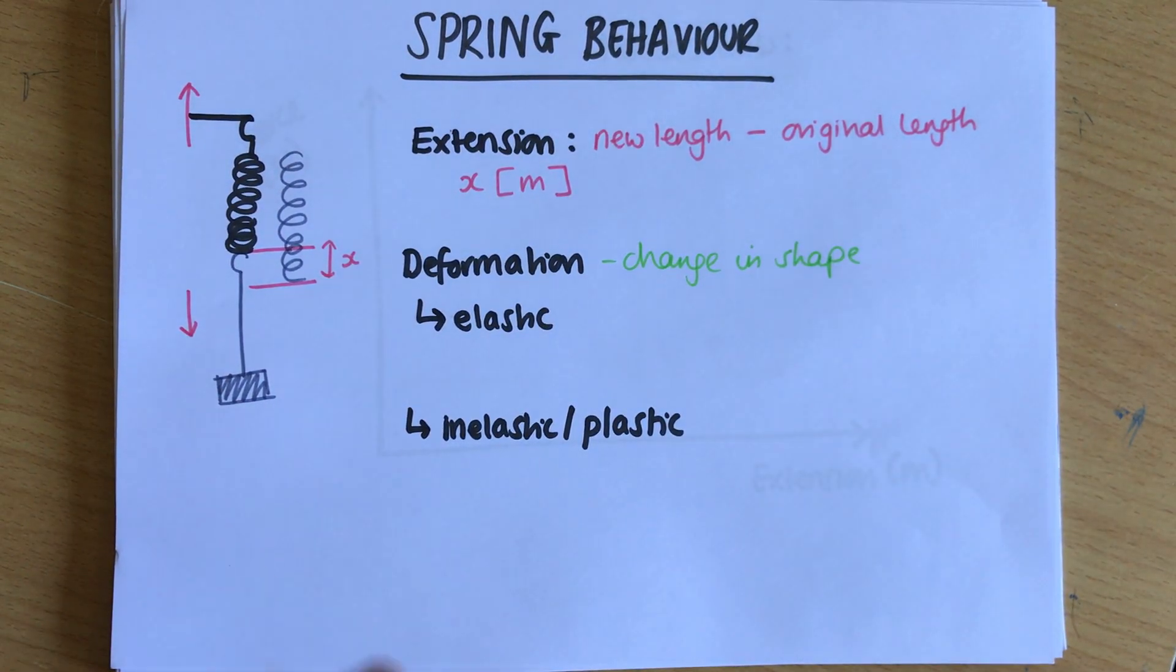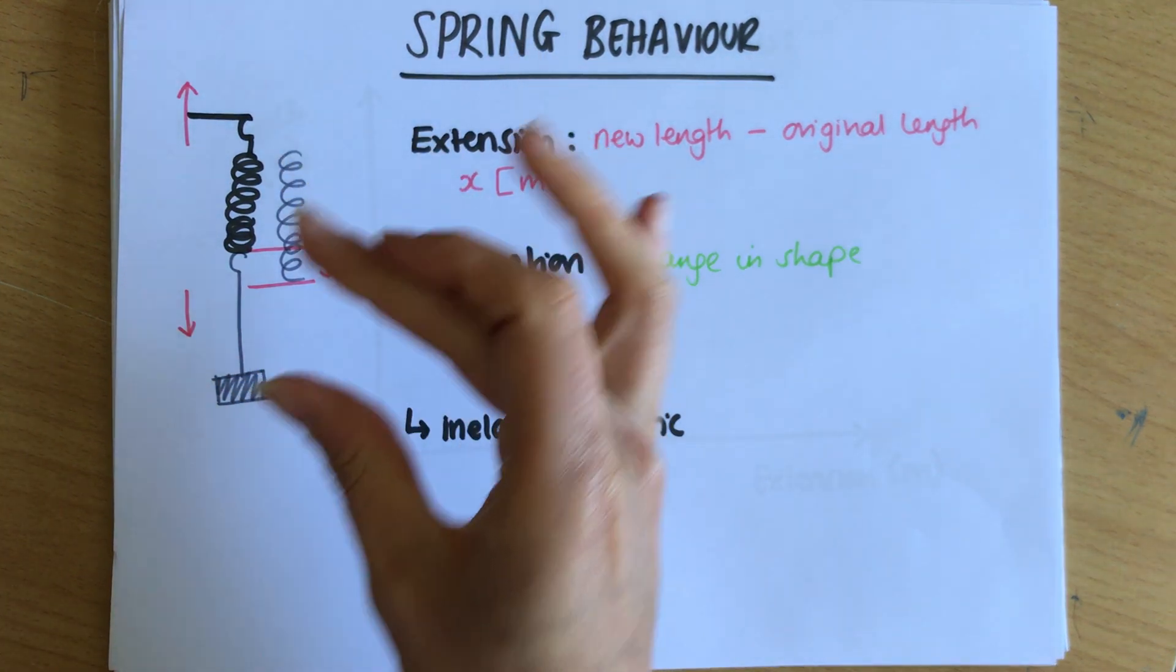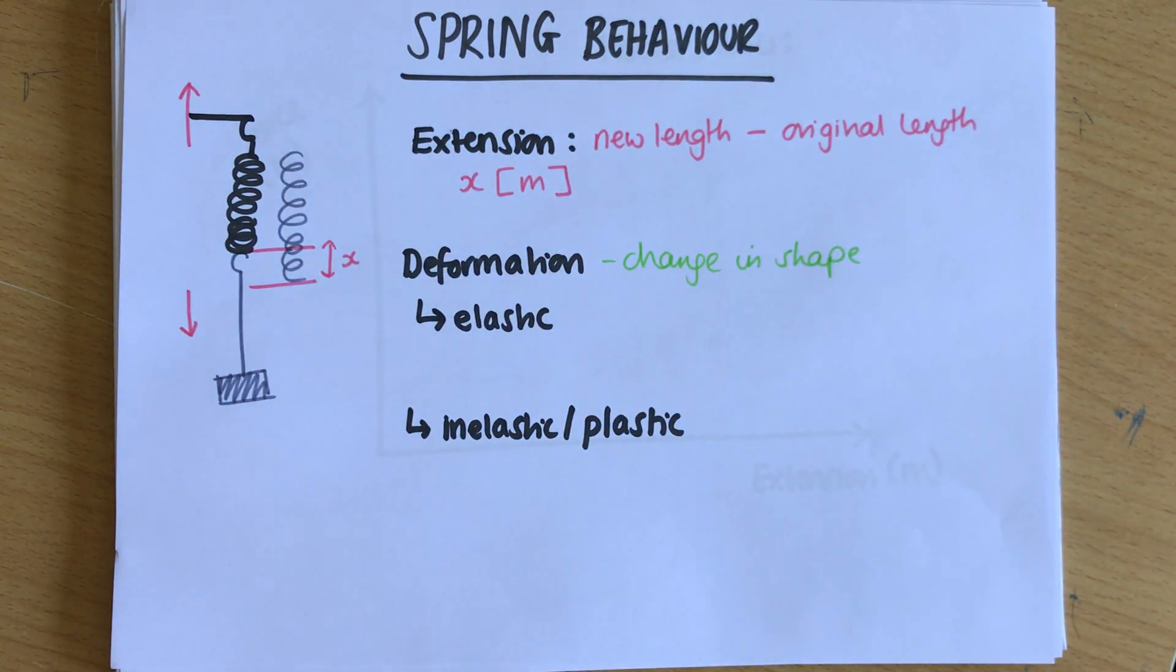There's still an extension, it's just the extension will be a negative number because it gets smaller. So you could squash the spring instead and make it smaller, and then you'd still have an extension—new length minus original length—but it would be a negative number.